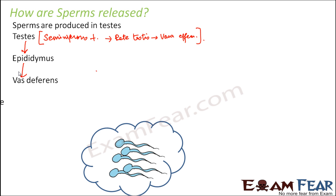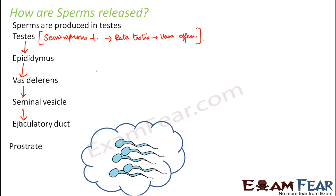From the epididymis, it will get into the vas deferens, which is a longer tube. From vas deferens, the seminal vesicle — a reproductive gland — will also pour in its secretion. Then it will join the ejaculatory duct. Secretions from the epididymis, vas deferens, seminal vesicle, and prostate gland are all essential for the maturation and motility of the sperms. Finally, after the prostate secretion joins in, it will enter the urethra and be released outside.